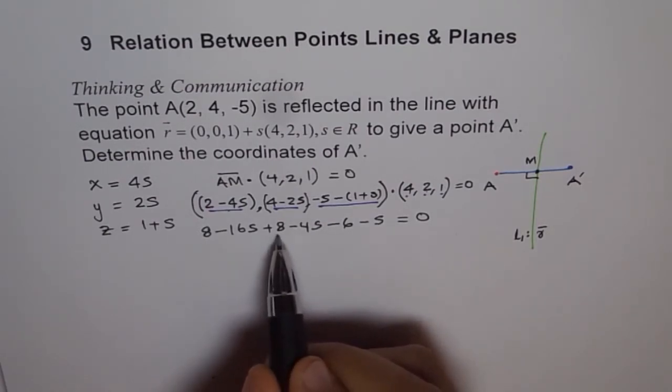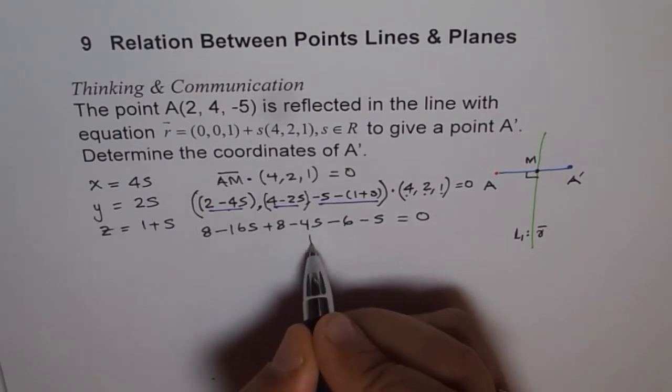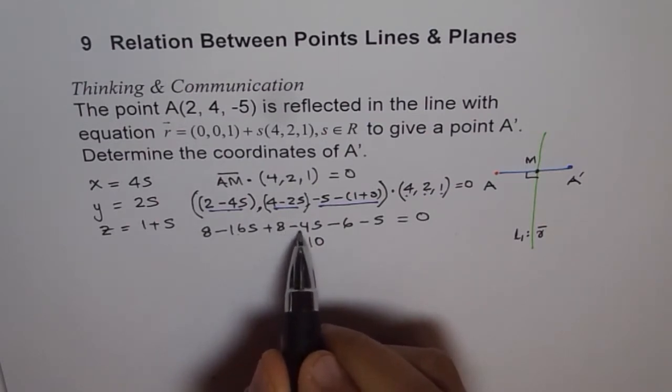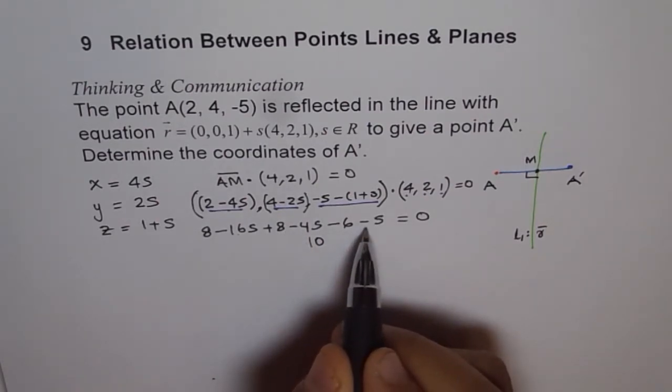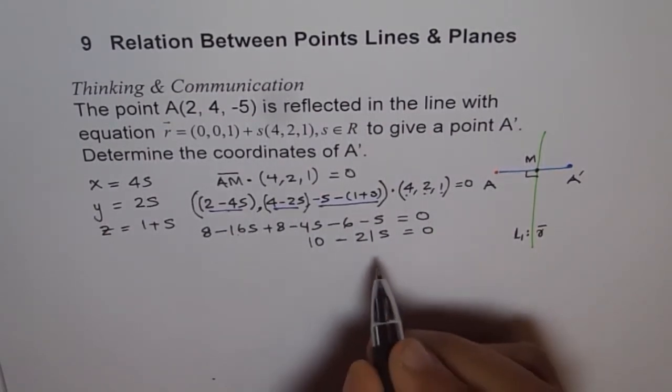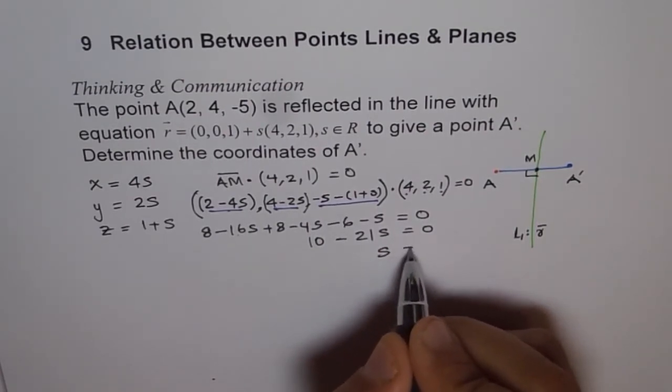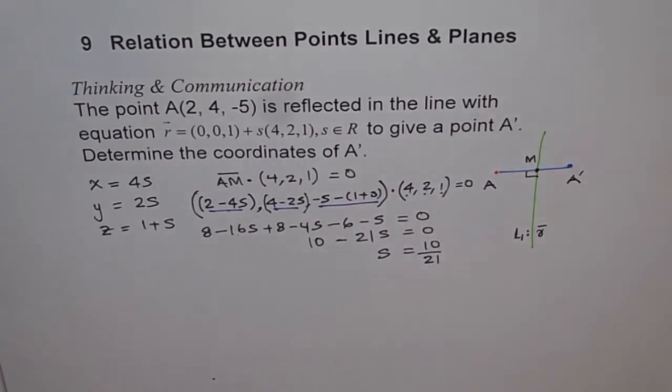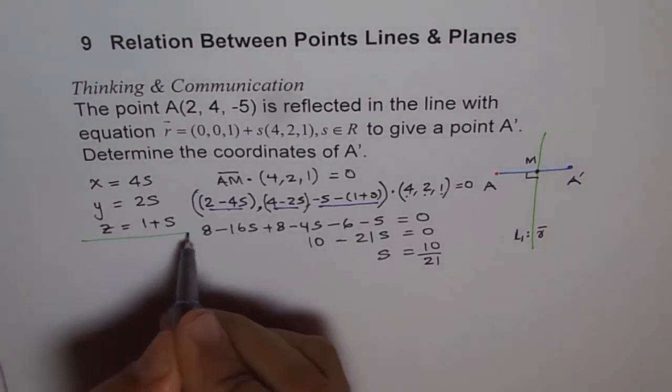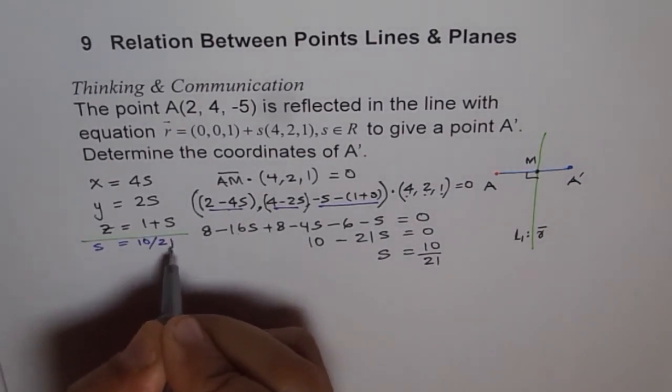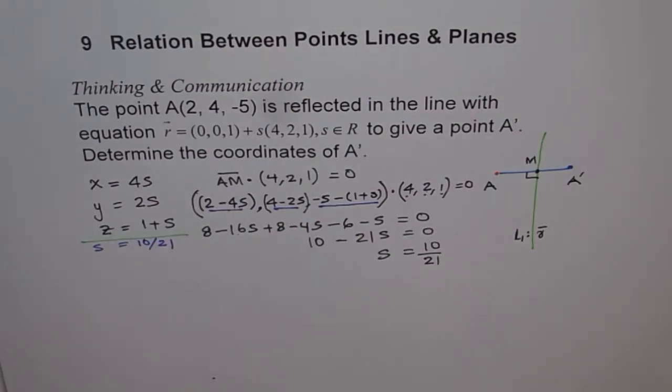Now we have one equation with one variable. Good for us. We can now combine like terms and see what we get. 8 plus 8, 16 minus 6 is 10. So we get 10 here for numbers. And with the S values, we have -16 and -4 as -20, and -1 gives me -21. So we get -21S equals to 0. Wait, 10 - 21S = 0. From here, we can find what S is. We say S is equal to 10 divided by 21. So we get the value of S, 10 divided by 21.